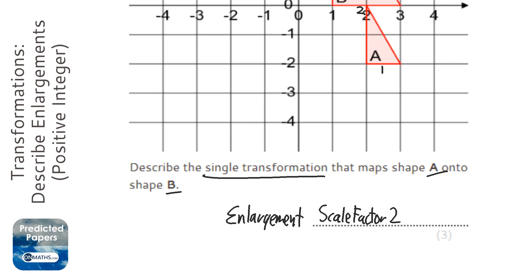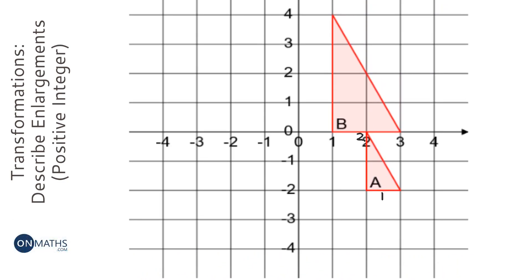Now last thing we need to do is the center of enlargement. To do that you get a ruler and you join up all of the points but carry them on. So I'm joining the bottom left ones, I'm drawing the bottom right ones, and I'm joining up the top left ones.